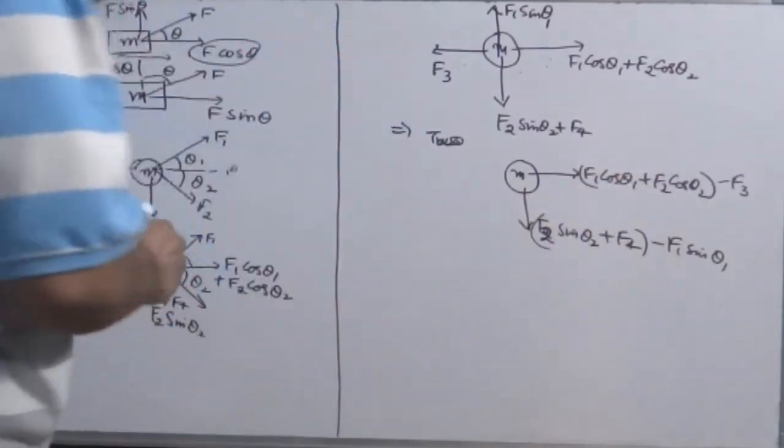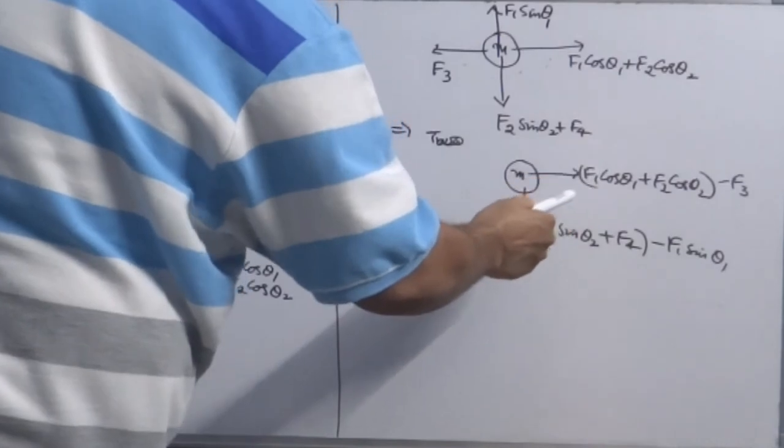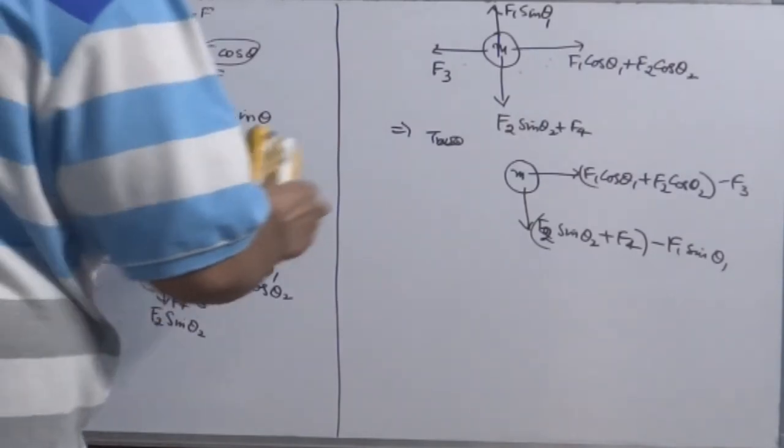Now you are left with finally two forces. Because this will have its own magnitude, this will have its own magnitude. So you can use Pythagoras to find resultant. You will have these types of problems in physics.